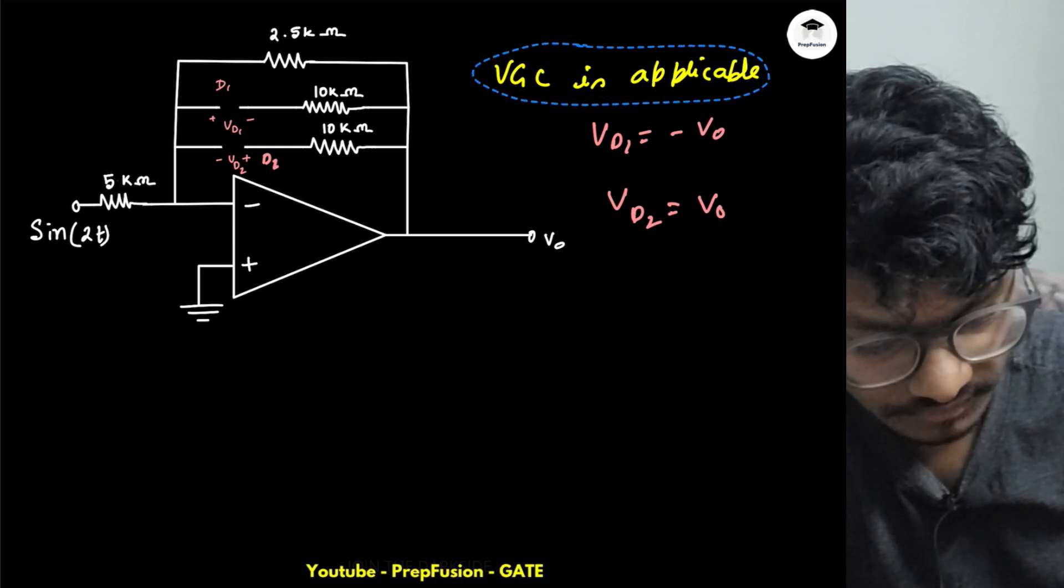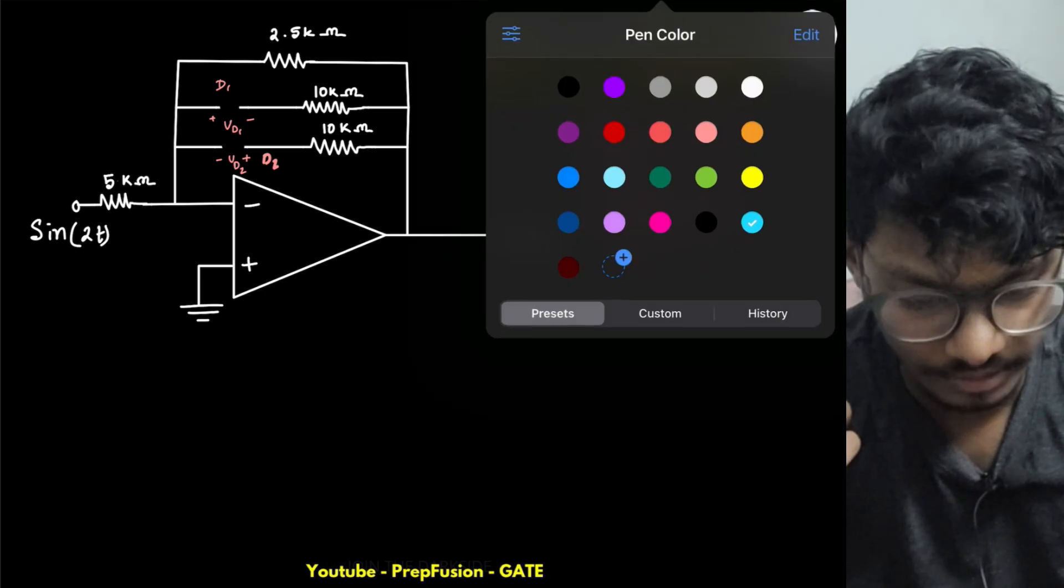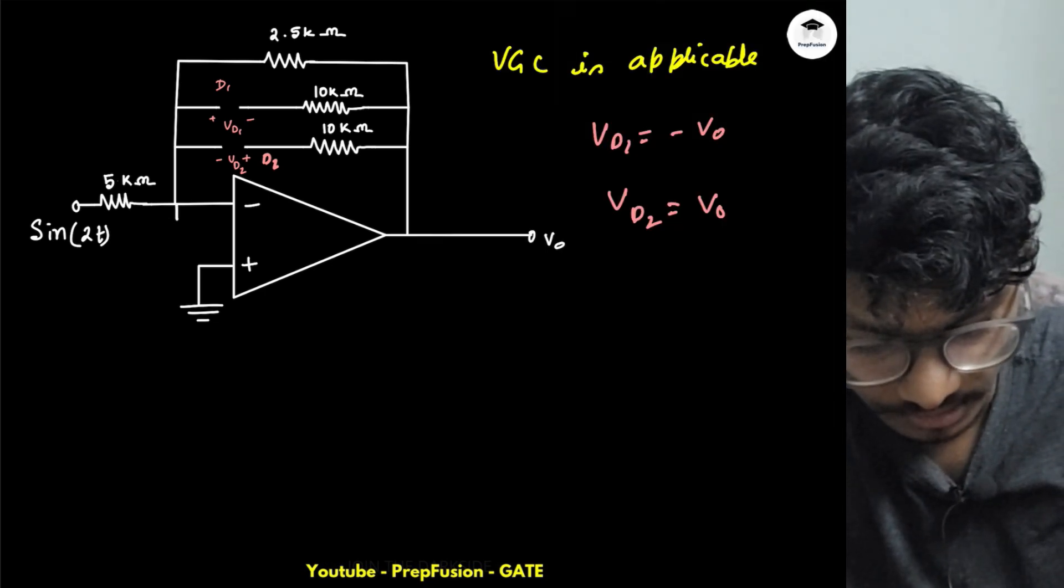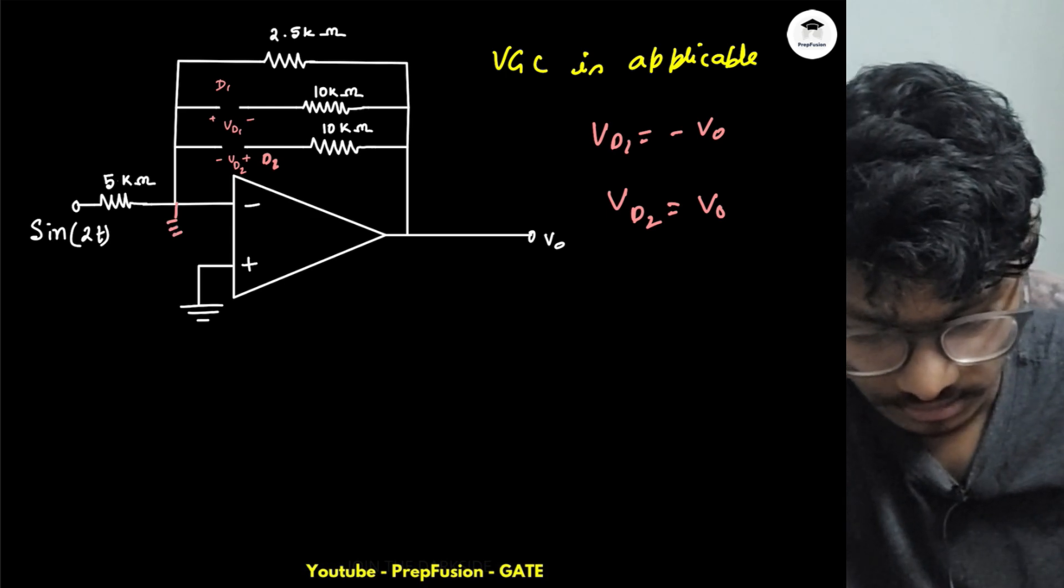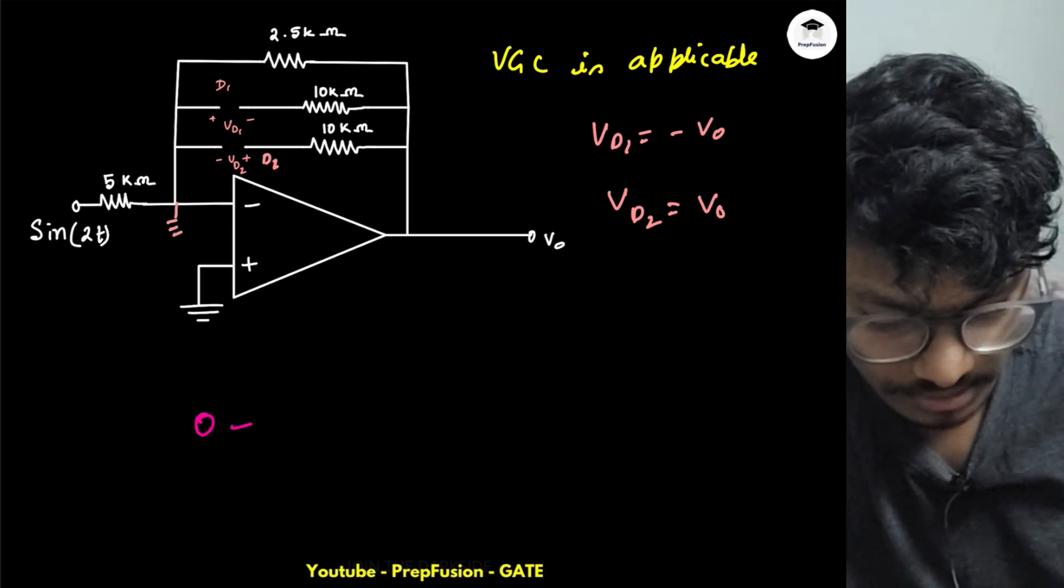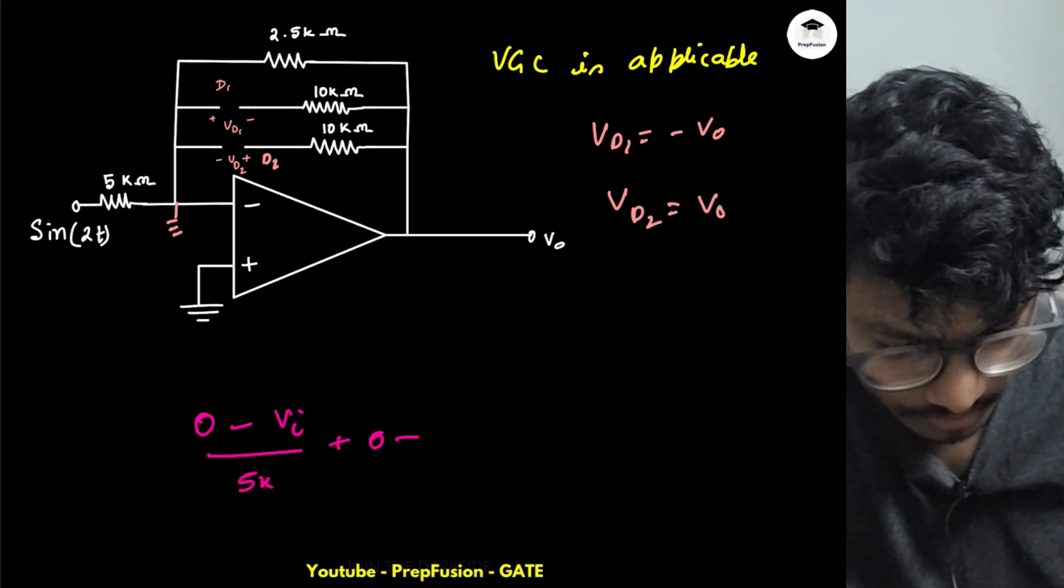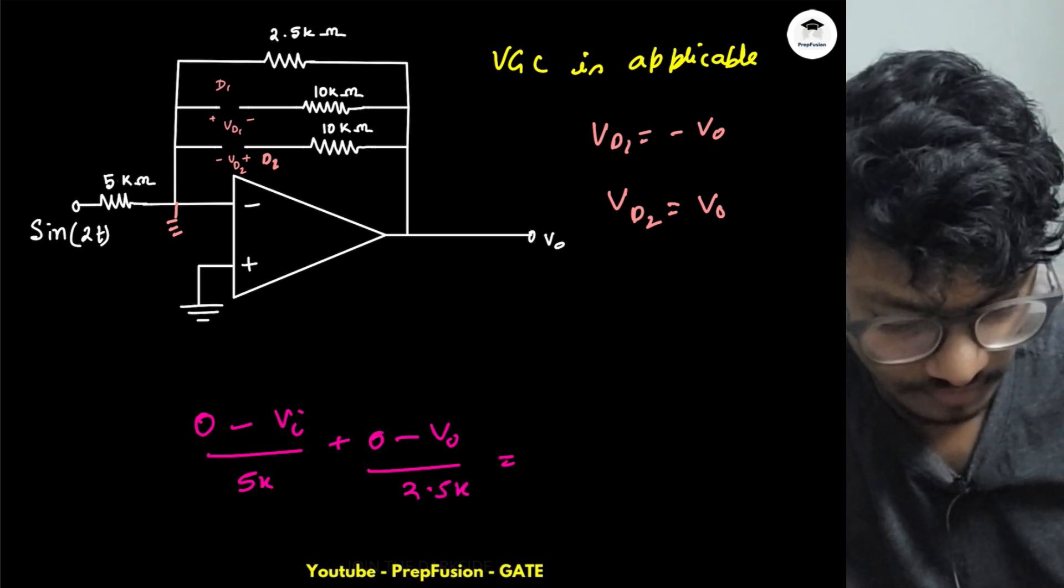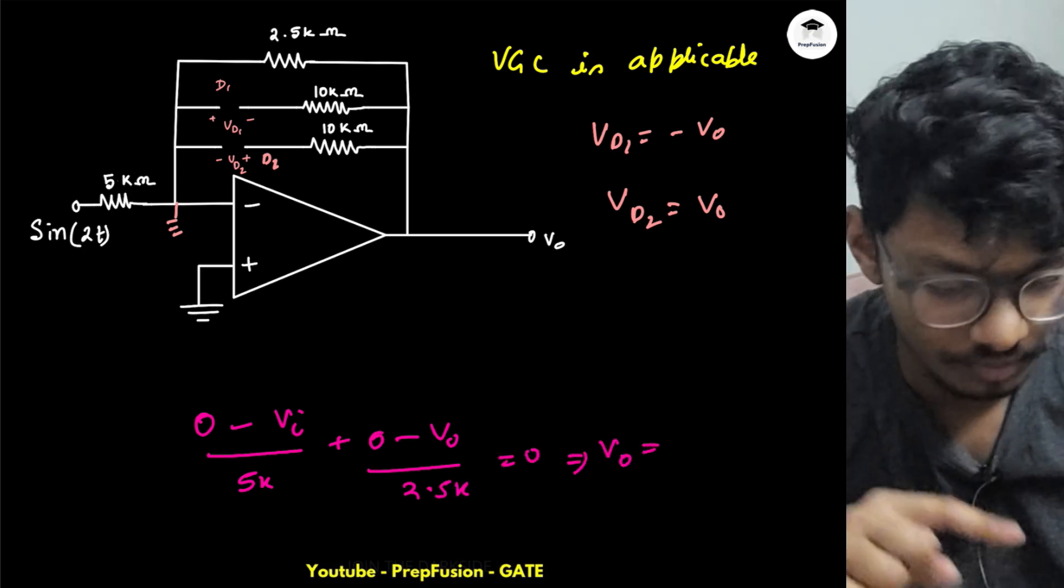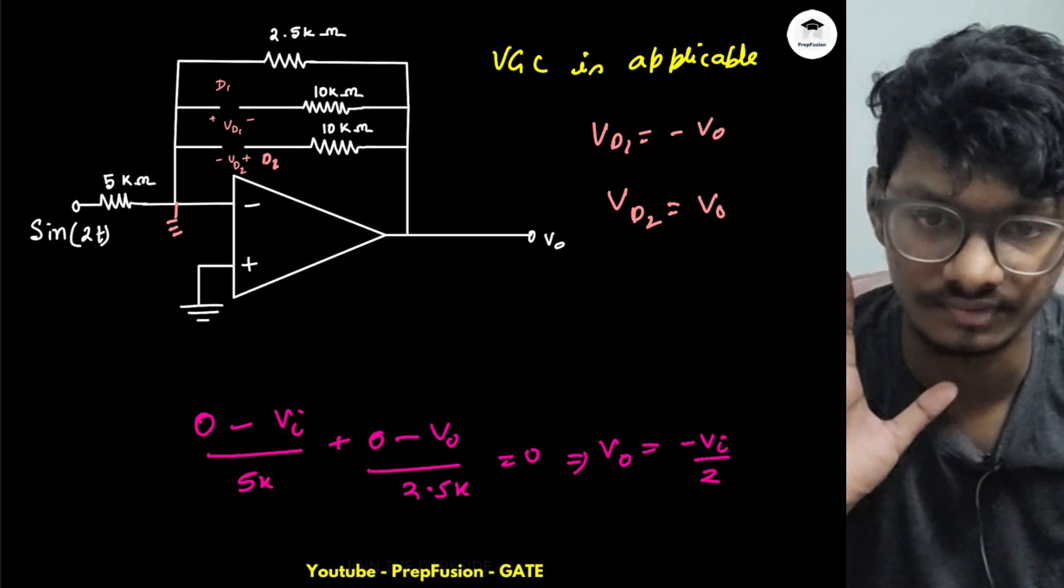Now I can compute my output voltage. I can simply apply KCL at the non-inverting terminal of the op-amp. This will be (0 - Vin)/5kΩ + (0 - Vo)/2.5kΩ = 0. So my Vo will be equals to minus Vi divided by 2.